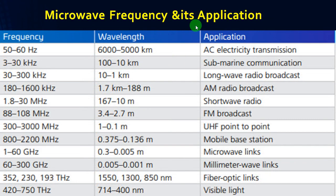Microwave frequency and its applications: as mentioned earlier, each frequency has certain applications and certain wavelengths. For example, the frequency between 50 to 60 Hz supports AC electricity transmission, whereas 60 to 300 GHz supports millimeter wave links, and 1 to 60 GHz supports microwave link transmission. These are the applications mapped against the frequency.